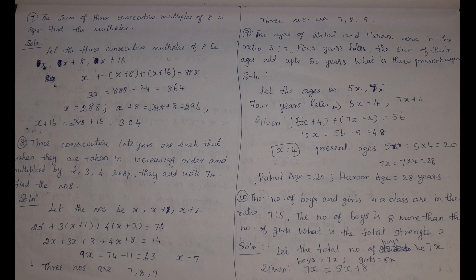Eighth problem: 3 consecutive integers, when taken in increasing order and multiplied by 2, 3, and 4 respectively, add up to 74. Find the numbers. Let the integers be x, x+1, x+2. Then: 2x + 3(x+1) + 4(x+2) = 74. Solving: 9x = 63, so x = 7. The three numbers are 7, 8, and 9.